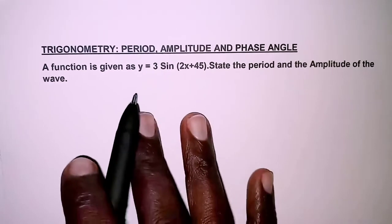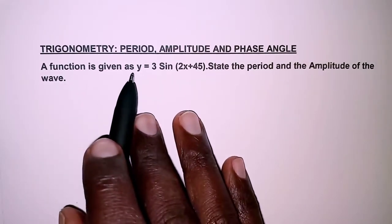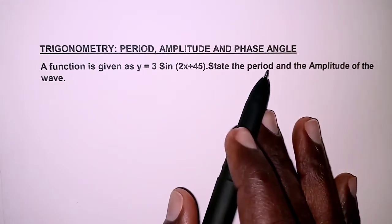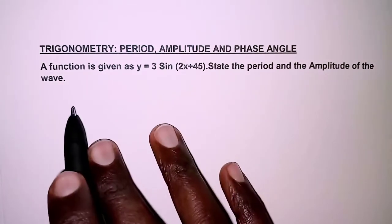So the question reads: a function is given as y = 3 sin(2x+45). State the period and the amplitude of the wave.